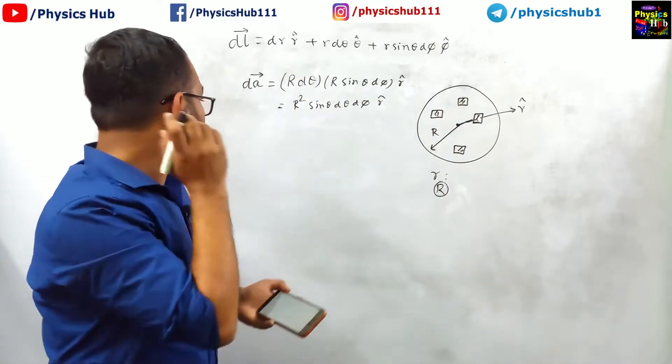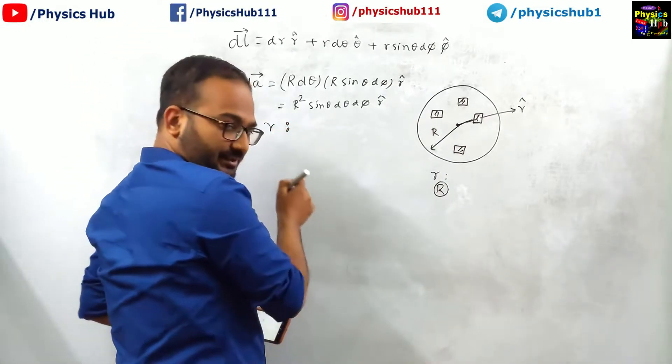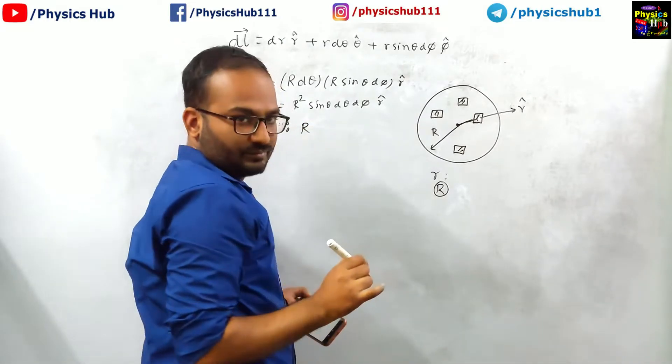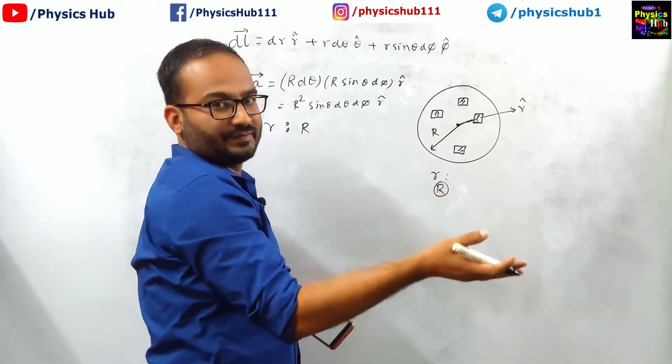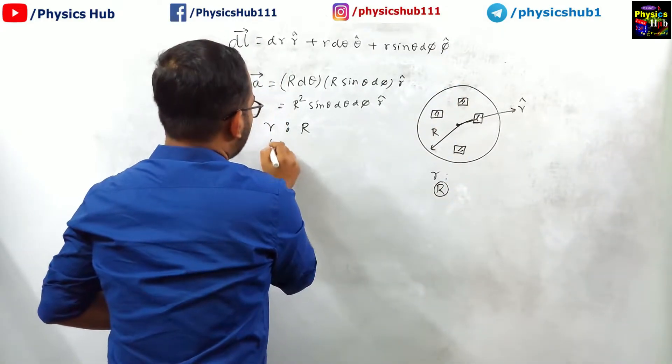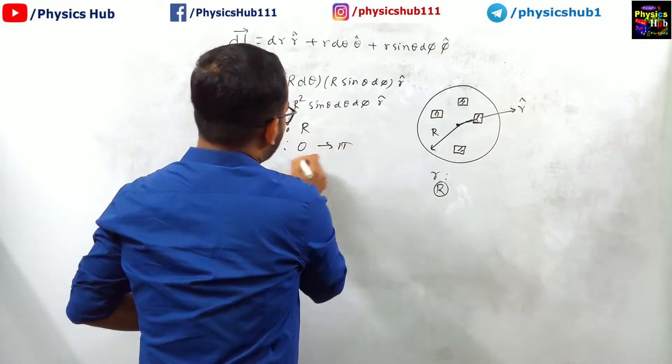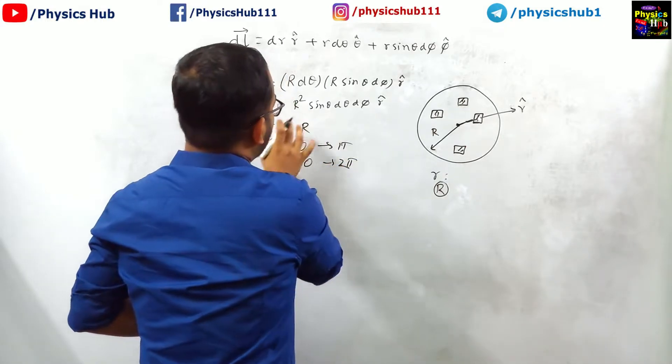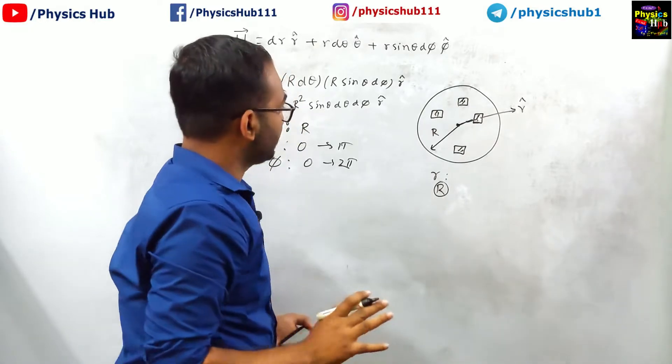If you want to calculate the total surface area, we have to take the limit of r, limit is very important. Here r equals R, because for the whole surface, value of r is R. What about theta? Theta is varying as usual 0 to pi, phi is varying as usual 0 to 2 pi, but here r has a fixed value capital R. I hope this one you understood.